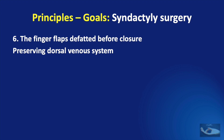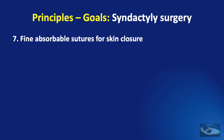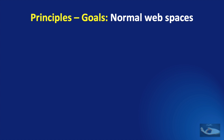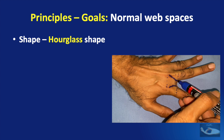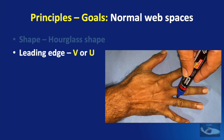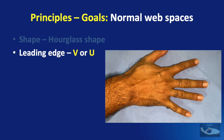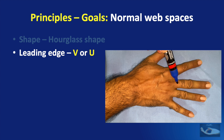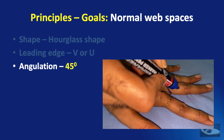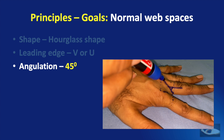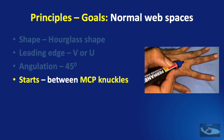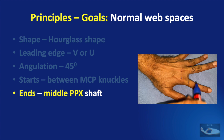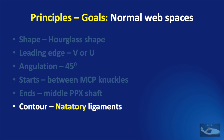The normal anatomy of the finger web spaces is important both functionally and cosmetically. The shape of the normal finger web is in the form of an hourglass. The leading edge is in the shape of a V or a U — a V shape is usually seen between the middle and ring fingers and between the index and middle fingers, while between the ring and little fingers the web space is usually U-shaped. The finger web has an angulation of about 45 degrees, starting from proximal and going distal and from dorsal to volar. It starts between the knuckles of the metacarpophalangeal joints and ends at the level of the middle of the proximal phalanx shaft. The thin contour of the web is formed by the natatory ligament, or the superficial transverse metacarpal ligament.